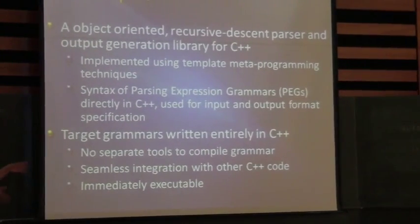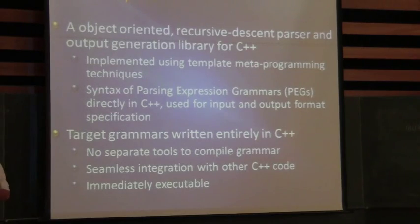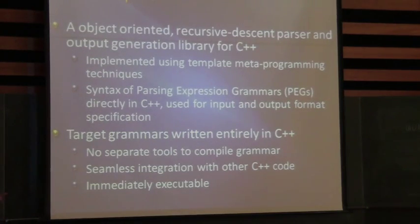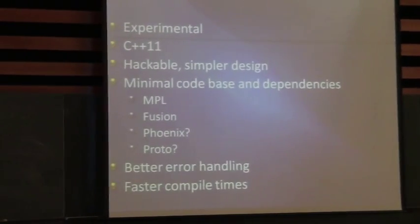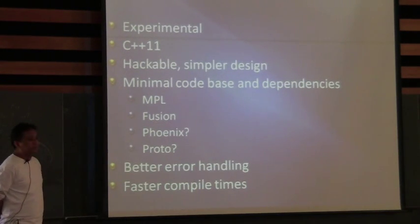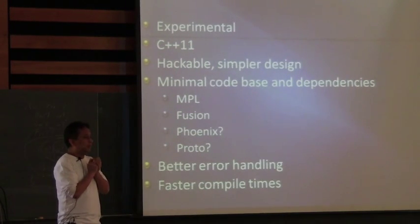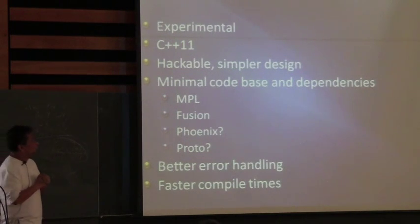Spirit X3 is an experimental version of Spirit using lots of features of C++11. It's hackable — at least that's what I intend it to be — and it has a very simple design. Compared to V2, X3 will be so much simpler to understand. It has a minimal code base and dependencies. It's still relying on MPL; I can't live without MPL, though I tried to find a way to have some minimal type list mechanisms. It's just not good enough, so why reinvent the wheel?